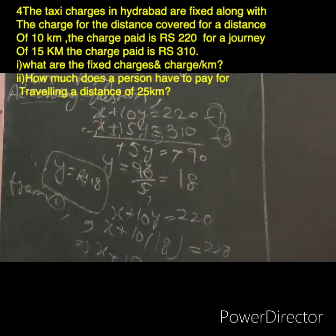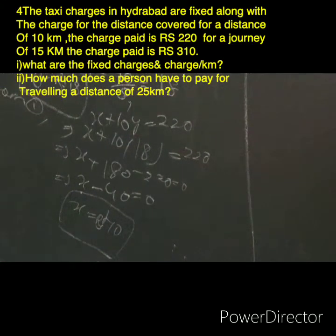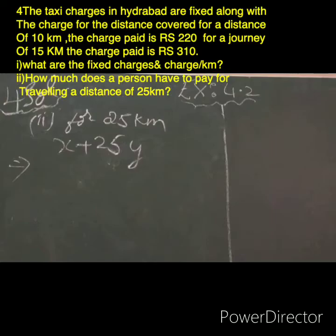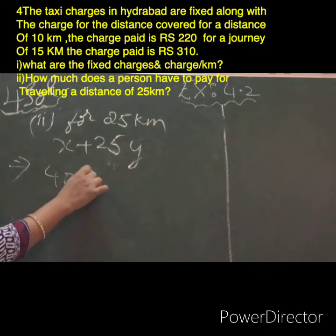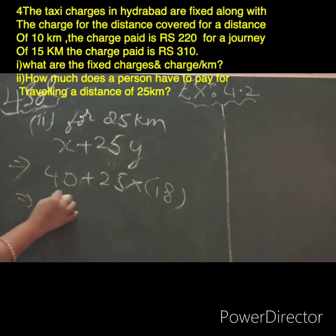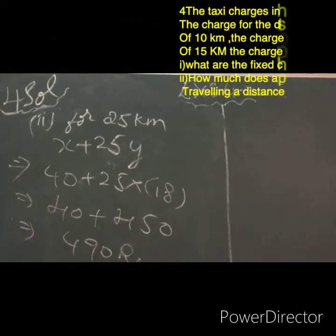X equals 40, which is your fixed charge: 40 rupees. And your charge per kilometer is Y equals 18 rupees. Now for the second part: for 25 kilometer distance, the charge is X plus 25Y equals 40 plus 25 into 18, which equals 40 plus 450, giving 490 rupees charged for 25 kilometers.